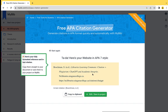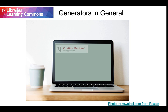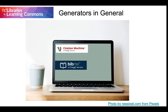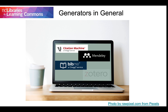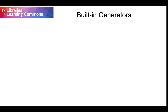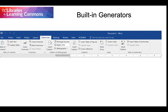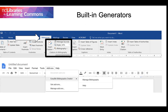Some are free, and some require payment for full access. For example, Citation Machine and BibMe have free options that will create references for you based on the data you input. Creating an account with Mendeley or Zotero will allow you to cite and store your research. You can also find citation generators in many word processing programs. Microsoft Word has a referencing feature built right in under the References tab. You can even find citation generator add-ins for Google Docs.